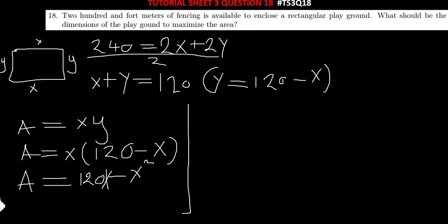At maximum, the value of x at maximum is simply found by—you can complete the square or you use this simple formula here. So x at maximum is found by negative b over 2a. Our b there is 120.